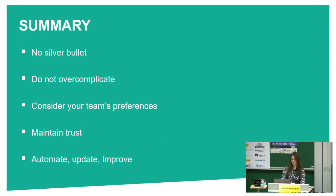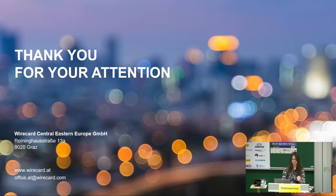As a summary: there is no single solution for all the problems — if you disagree with some points feel free to talk to me after. Complicated things are bad, so if you can make something easy, don't go for complicated things and try to keep things simple. Make sure your team is participating in the choices you do with your CI, and then they will trust it more. Trust is very important, so don't lose it. Keep your tests green, and always automate, update, and improve things when you can. Thank you very much, and if you have any questions.